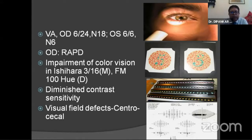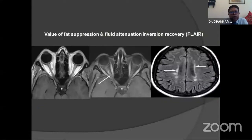There was diminished contrast sensitivity, as demonstrated by Pelli-Robson chart seen at our institution. Visual field defect was centrocecal, as shown in the figure. Our diagnosis was to rule out retrobulbar neuritis, and MRI was given. Here, multiple hyperintense periventricular lesions were seen, along with thickening of the optic nerve. So this is a case of retrobulbar neuritis.